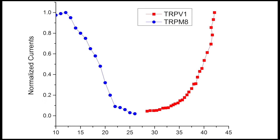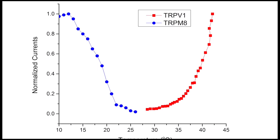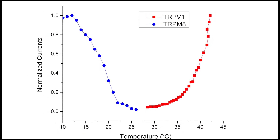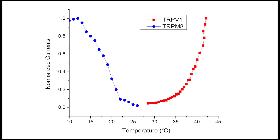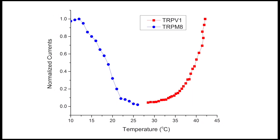Temperature-sensitive ion channels, like the TRP channels, are found in peripheral neurons, and members of this family are tuned to respond specifically to a narrow range of temperature stimuli. A general paradigm in the field has been that there is a distinct temperature-sensing domain which is tuned to respond sharply to temperature changes and that this domain is coupled to the channel pore.